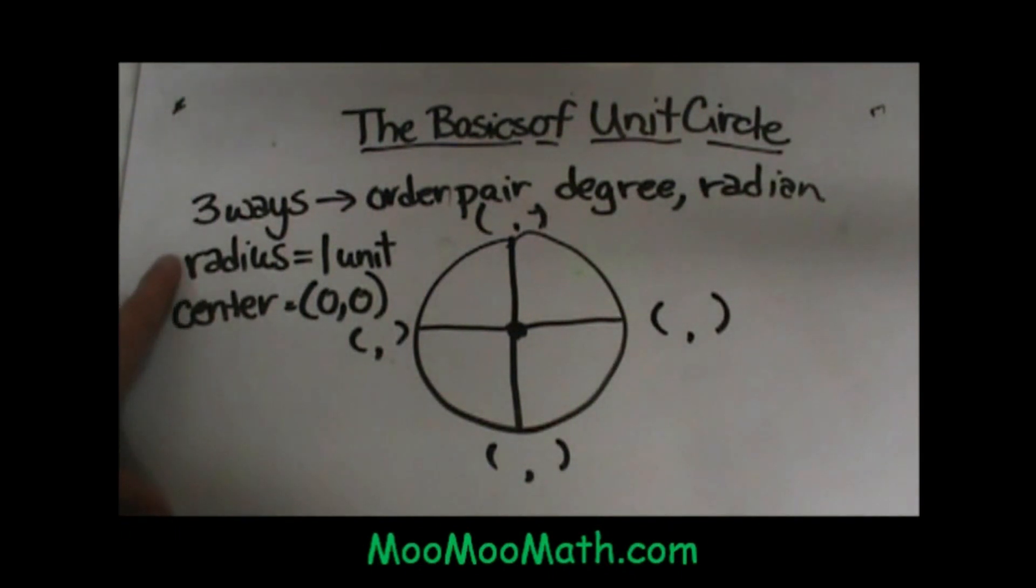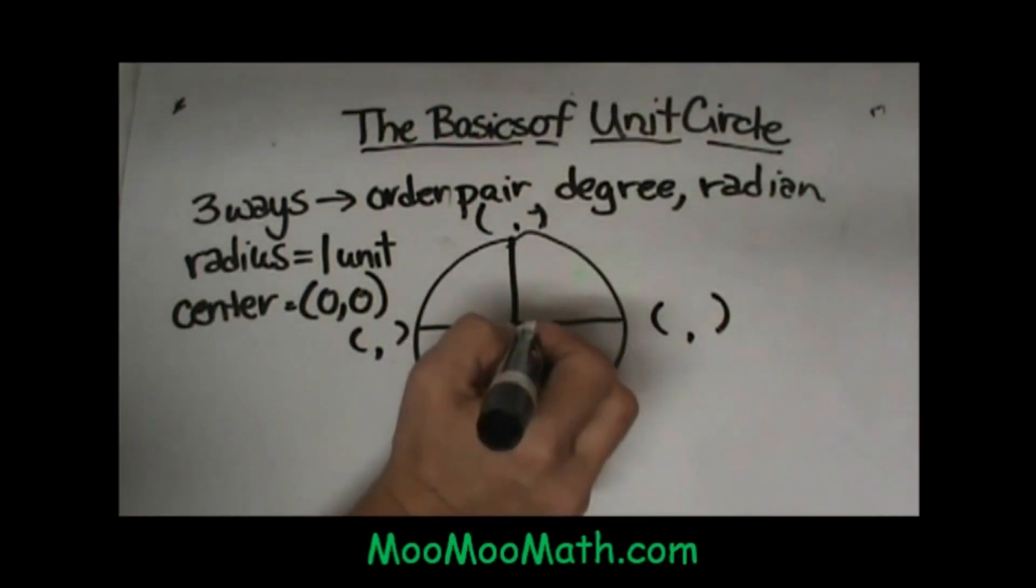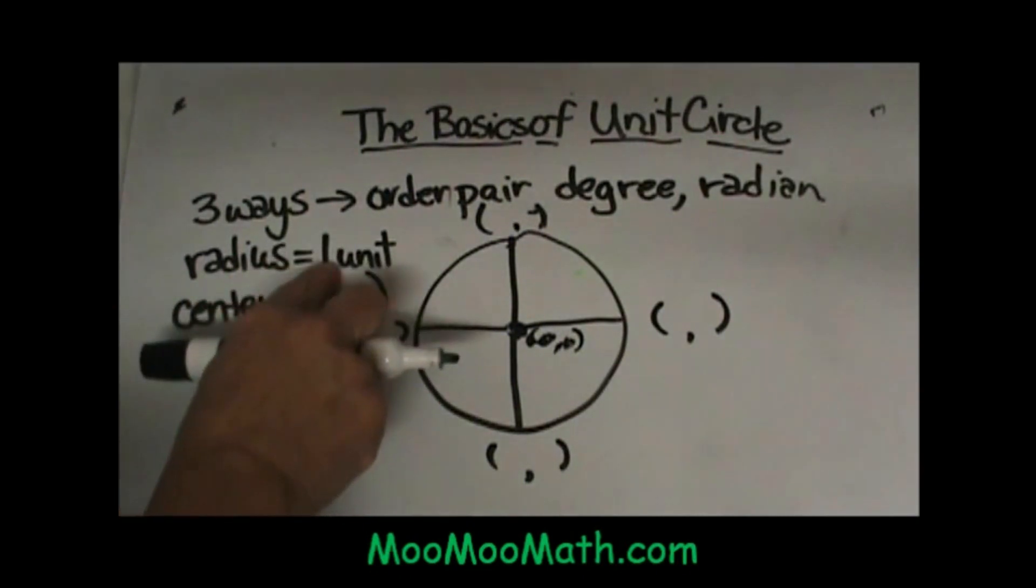First of all, let's start with the radius of the circle. We're assuming that the radius is one unit. We start with the center being at the point (0,0). Here's our origin. Since our radius is one,